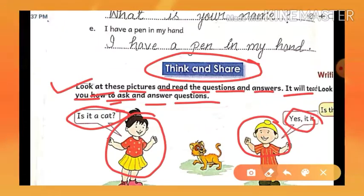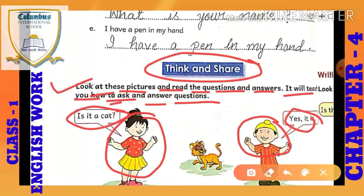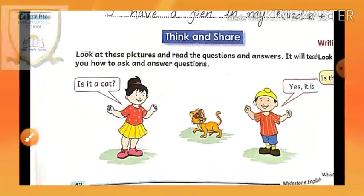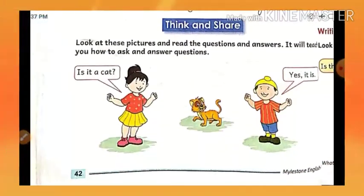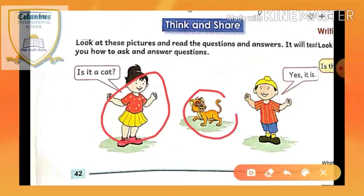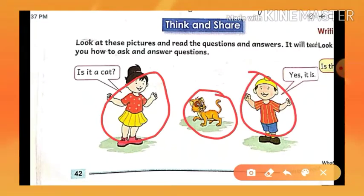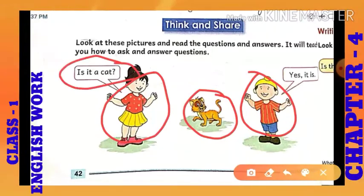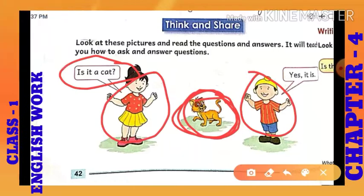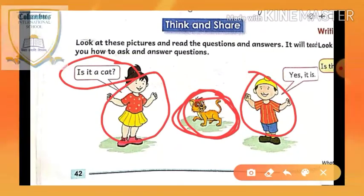Today we will read through these pictures and sentences. First, let's look at the picture. In the first picture, there's a girl and there's a cat, and after that there's a boy. This girl is asking a question about the cat.